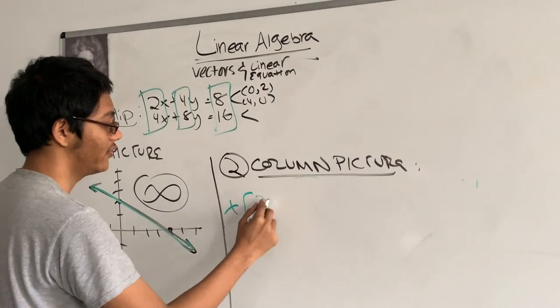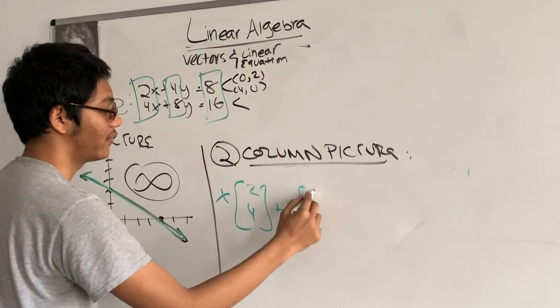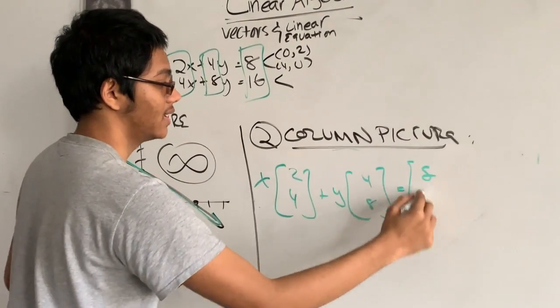So, I can write that as x times 2, 4, plus y times 4, 8, is equal to 8, 16.